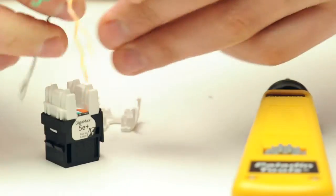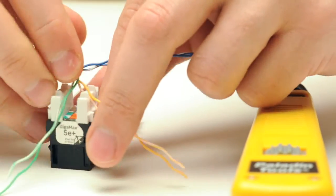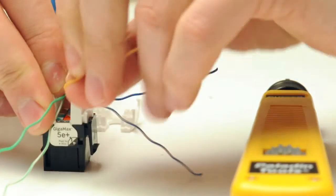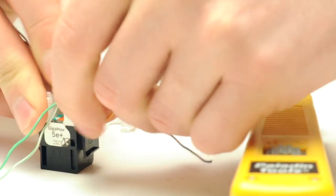Once you have properly fanned out your pairs, firmly push them into the IDC connector. Match the color code on the conductors to the color code printed on the jack.